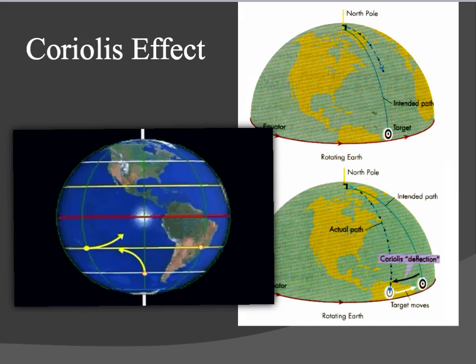The only motions not subject to Coriolis deflection are east and west motions along the equator. The equator is special, meaning that objects are not deflected there.